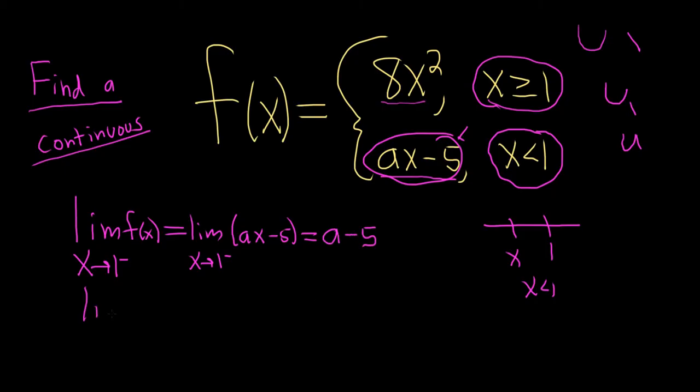Now let's take the limit from the right of f of x. And so if we're approaching 1 from the right, that means x is over here. That means x is bigger than 1. That means we use the top piece, right? What a beautiful problem.